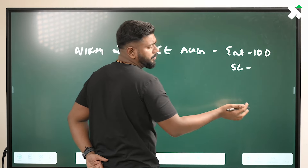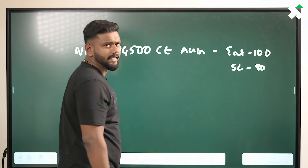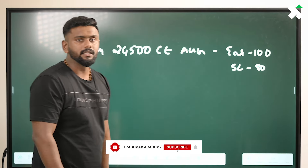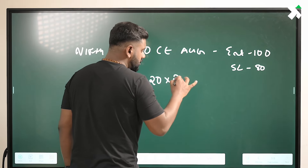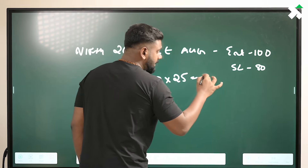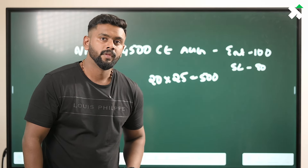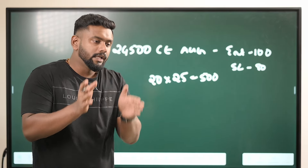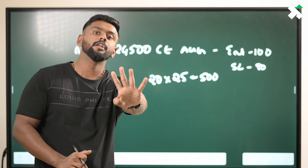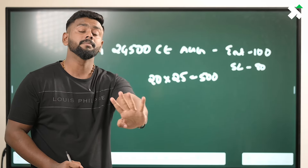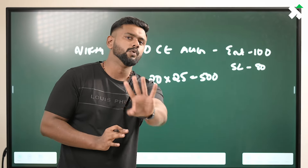Stop loss — most probably we have to be in 80, and we have to be in 70. That is why we have to risk in one lot. 20 x 25 — we have to risk in one lot. In your hand, if you are going to trade this case, maximum 4 lots. I prefer 3.